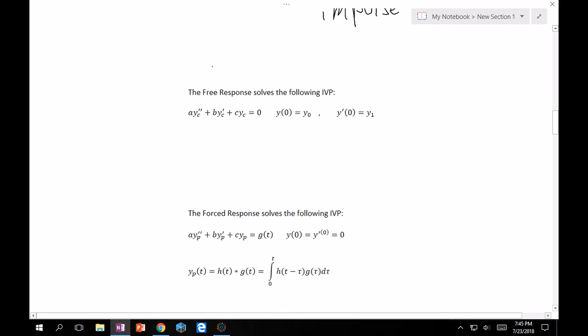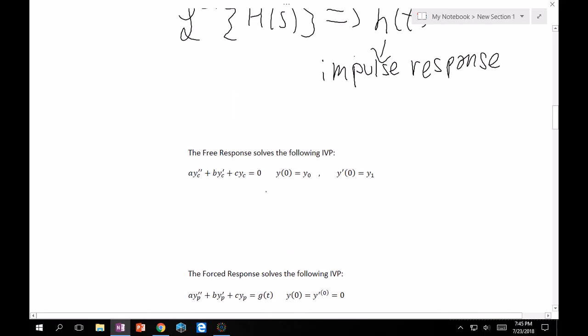Free response solves this IVP: a yc double prime plus b yc prime plus c yc equals zero, y of zero equals y0, y prime of zero equals y1. This time, we include our initial conditions. This is called the free response because it's free: the right-hand side has no forcing function. Therefore, the function is free to act upon however it seems necessary. I'm using yc because this is very similar to the complementary solution back in chapter 4. Everything is just coming all together now.